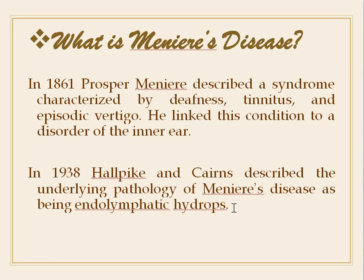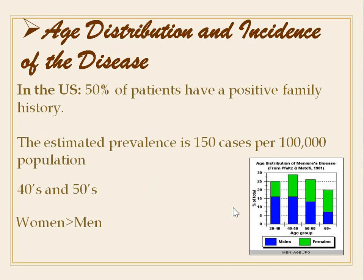In 1861, Prosper Meniere described a syndrome characterized by deafness, tinnitus, and episodic vertigo, and linked this condition to a disorder of the inner ear. In 1938, Hallpike and Cairns described the underlying pathology of Meniere's disease as endolymphatic hydrops.